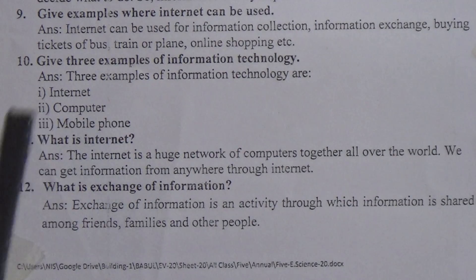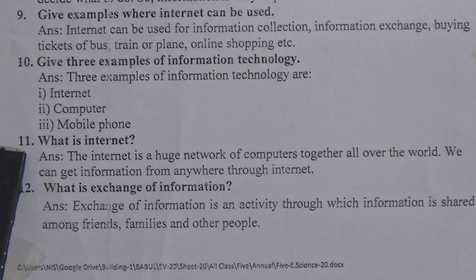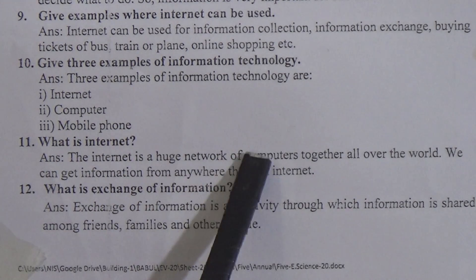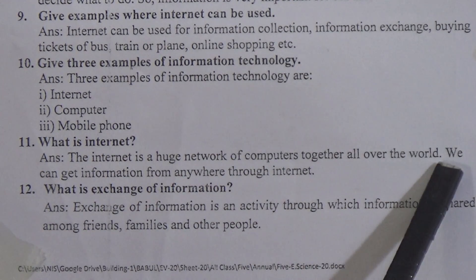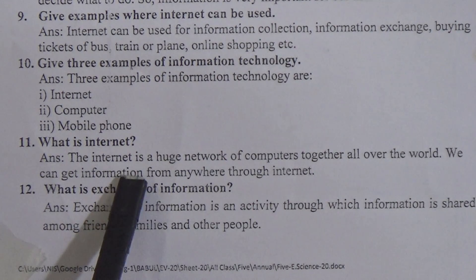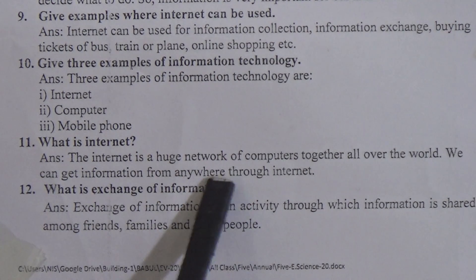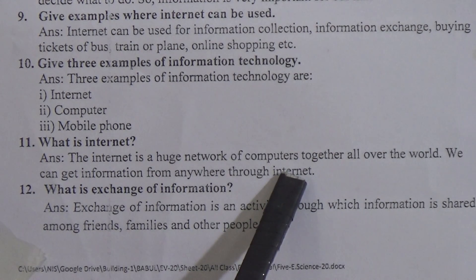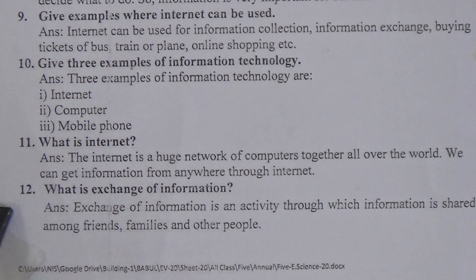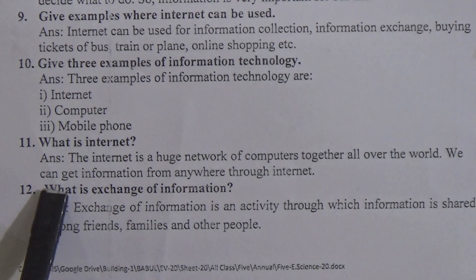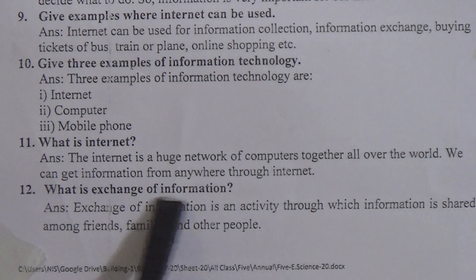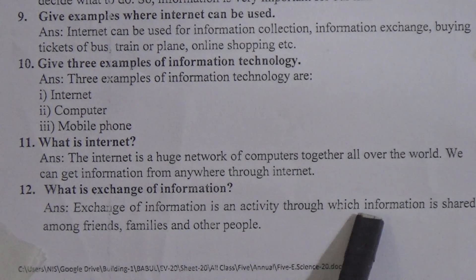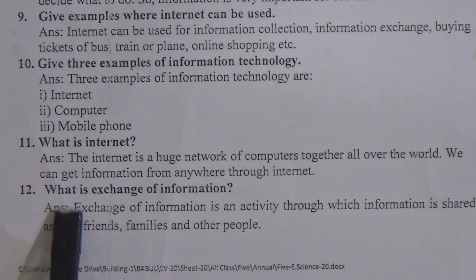The answer is: three examples of information technology are — first, internet; second, computer; third, mobile phone. Question number eleven: what is the internet? The answer is: the internet is a huge network of computers connected together all over the world. We can get information from anywhere through the internet. This is similar to question number four. Now come to the last short question.